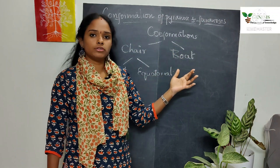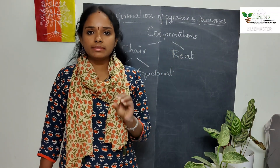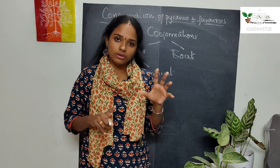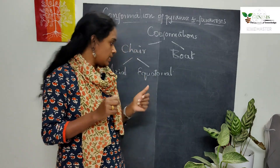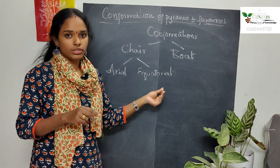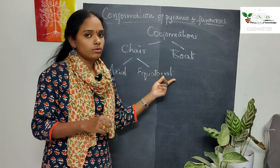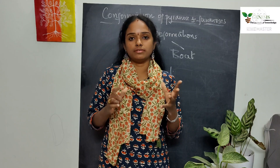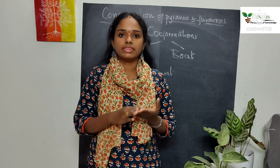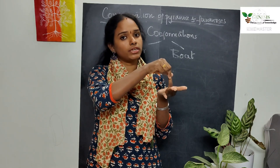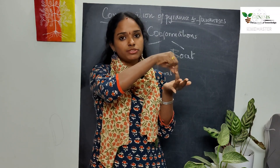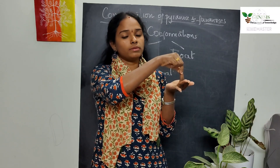This applies to both chair and boat conformations. Substituents attached to the carbon atoms — such as OH, CH₂OH, and hydrogen — are oriented either axially or equatorially. In the axial orientation, the substituent is perpendicular to the plane of the monosaccharide ring. In the equatorial orientation, the substituent is parallel to the plane of the ring.